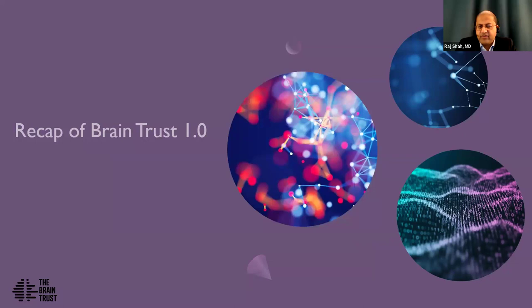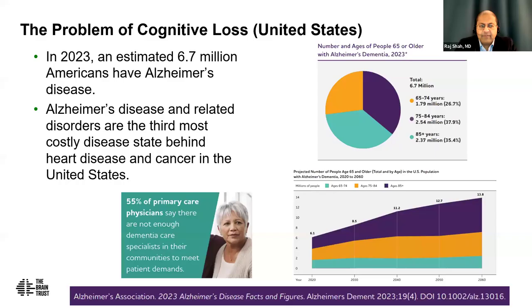Let's start with a recap. We should be anticipating a new 2024 Alzheimer's Disease Facts and Figures soon, but the most recent update is from 2023 estimates. As of 2023, there are an estimated 6.7 million Americans with Alzheimer's disease. When you think through all dementia — not just Alzheimer's — that number is even broader. Alzheimer's disease and related dementias are the third most costly disease in the United States behind heart disease and cancer.